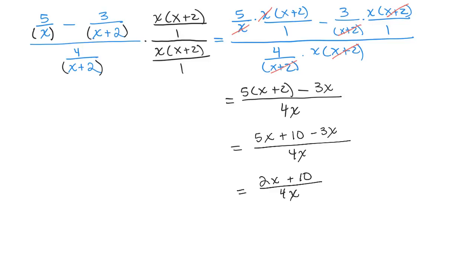You might notice there's a common factor of 2 in the numerator and denominator. So we want to factor out the 2 in the numerator: 2 times x plus 5 all over 4x.